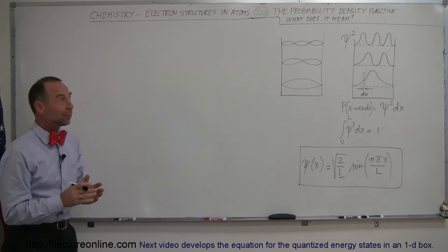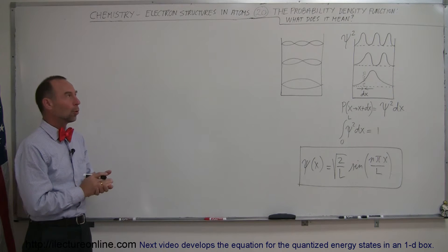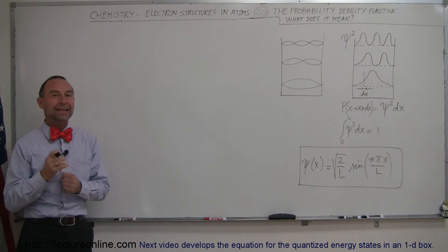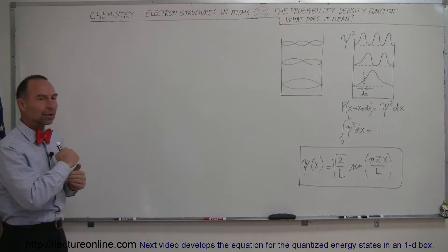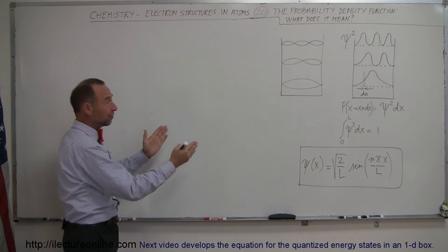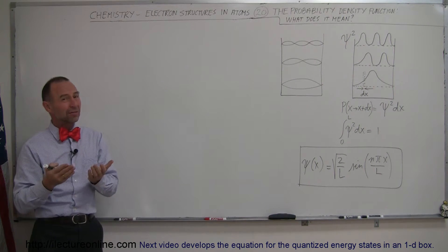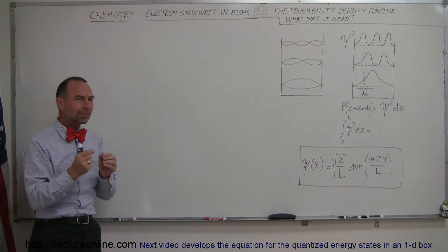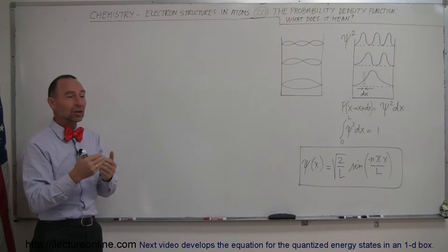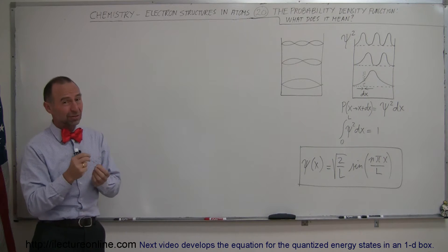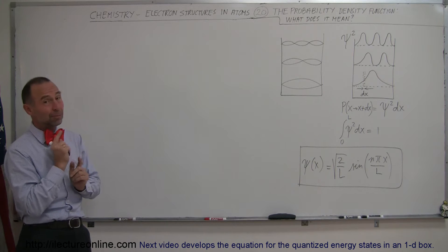Welcome to ElectronLine. Here we're going to talk about what we call the probability density function, or simply the probability density. In previous videos we tried to understand how an electron moves in a confined space, and we discovered that electrons are more like waves than particles, but they're not pure waves — they're not like electromagnetic waves because those don't have mass, and electrons do have mass. So there's a subtle difference between them.